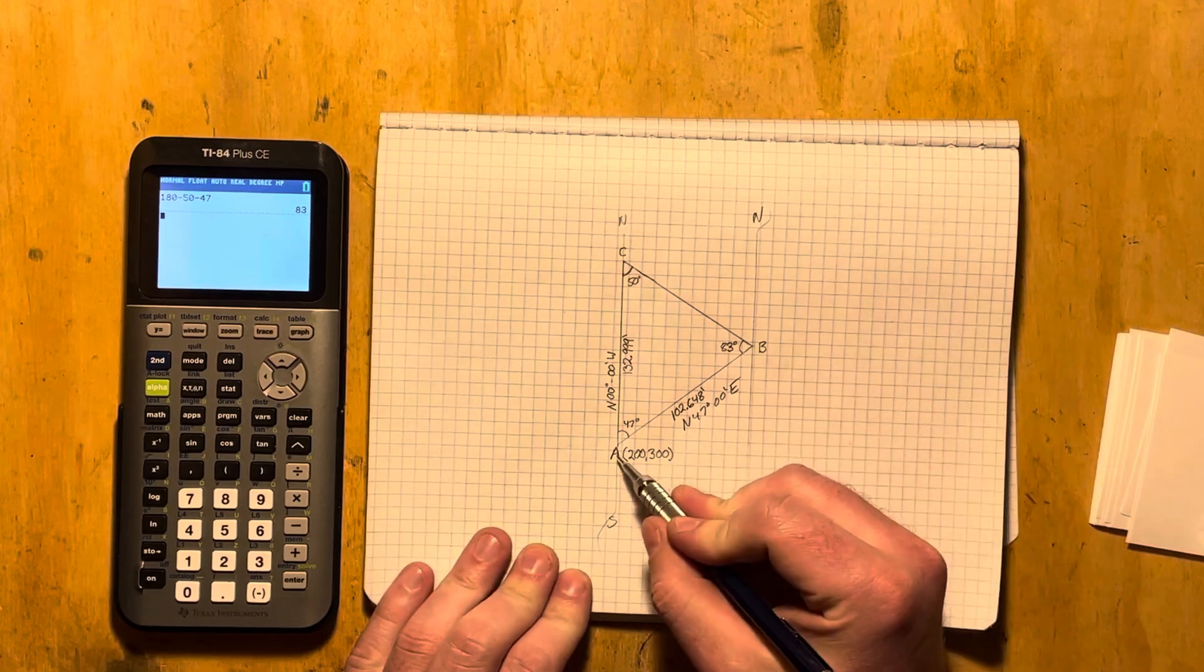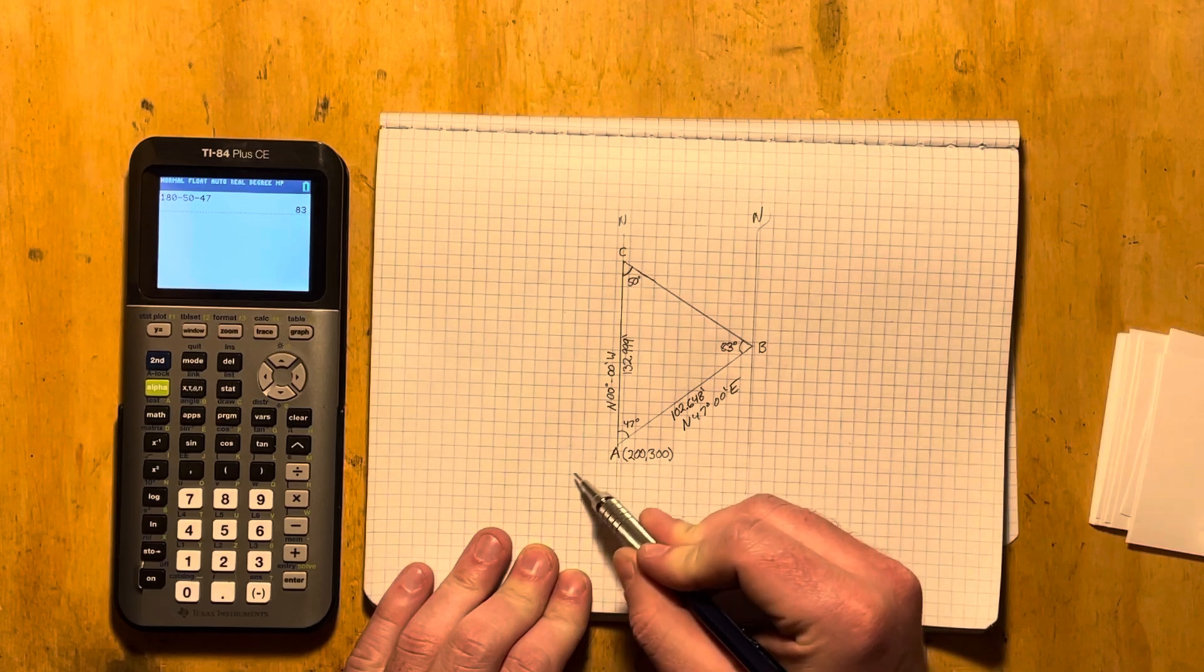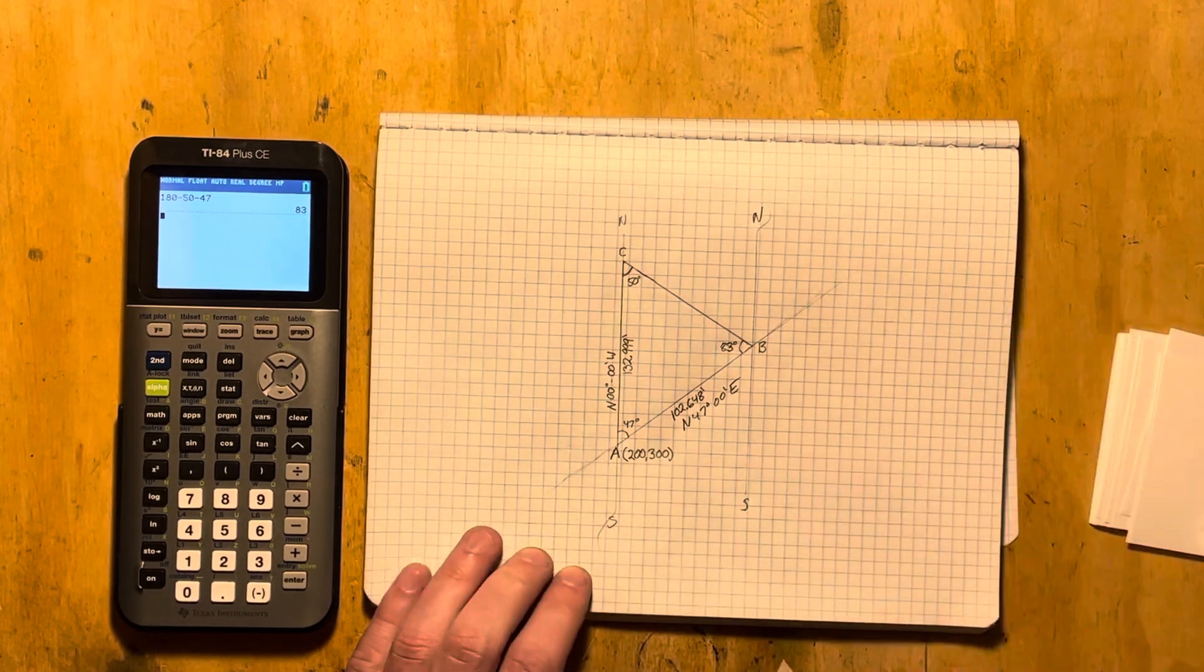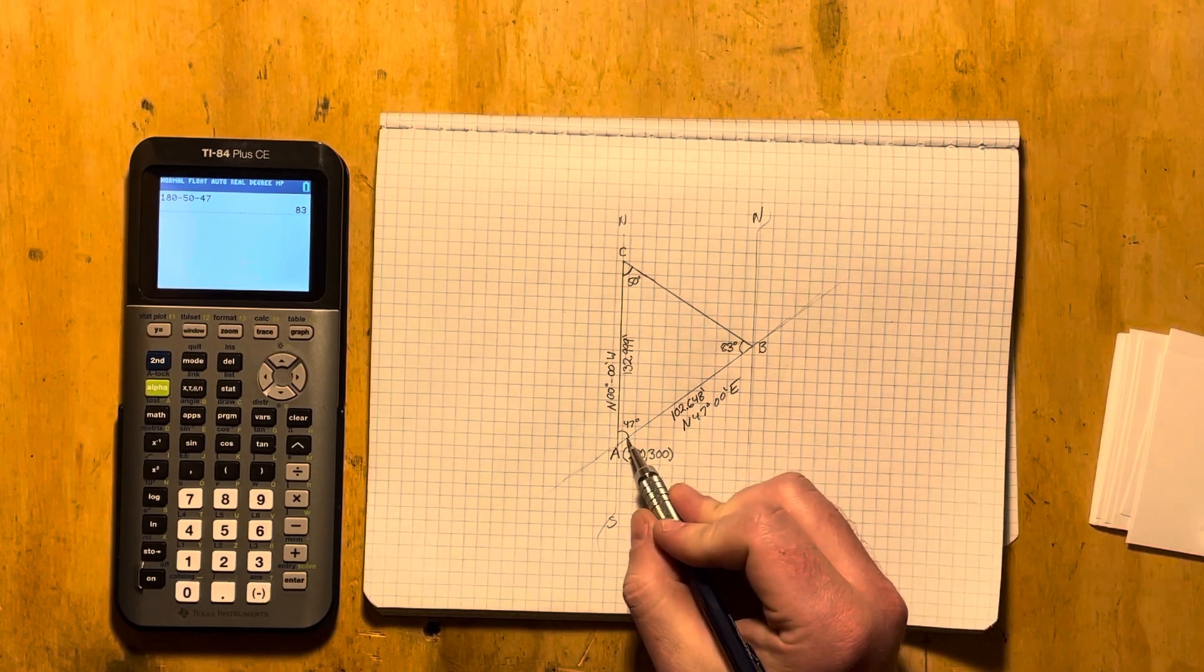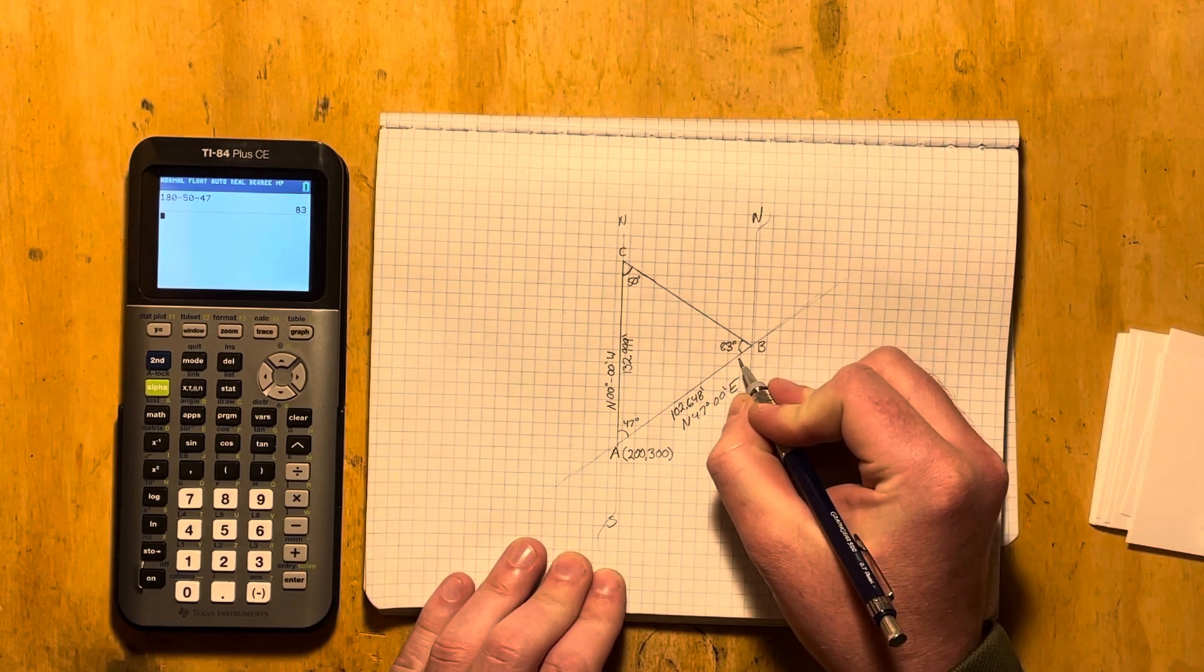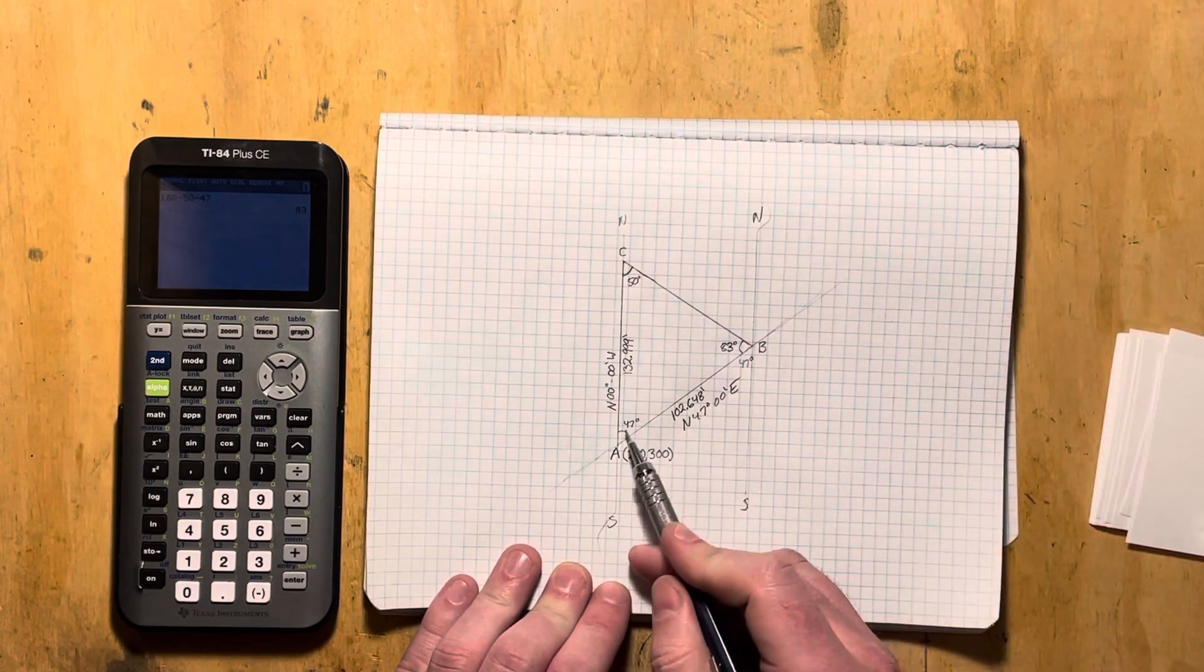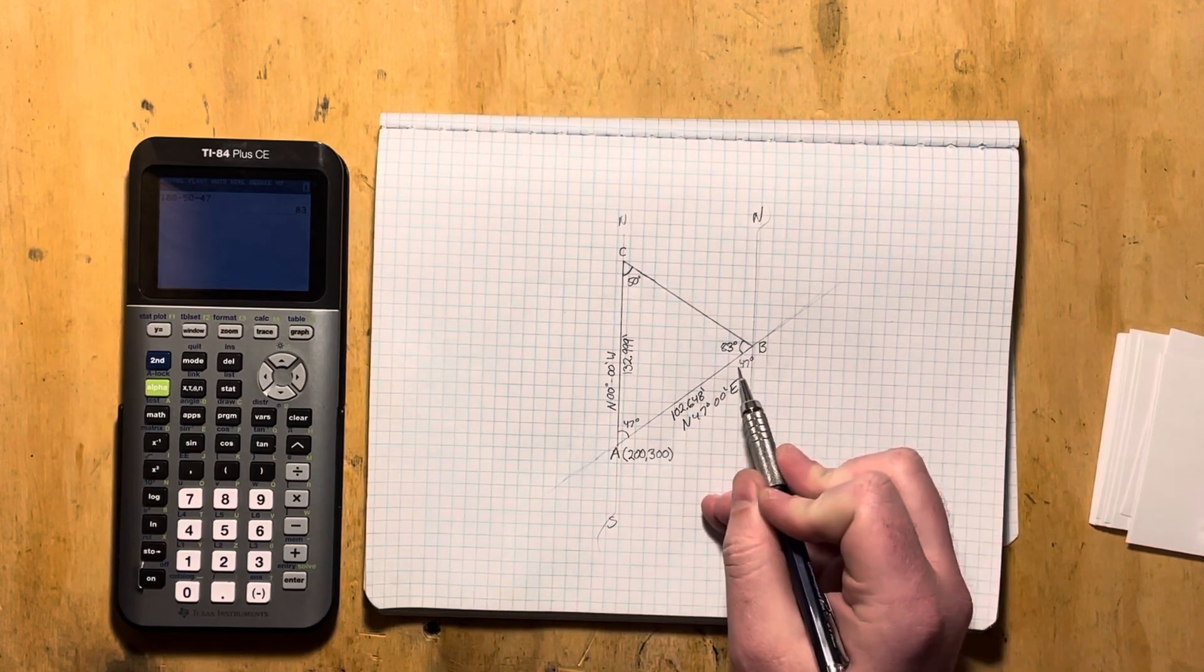Well now, this line AB is passing through these two parallel lines. So we know that this angle here is 47 degrees. Why? Because this line is parallel with this line. A straight line is passing through. They're opposite interior angles. So 47 degrees here.